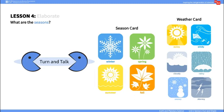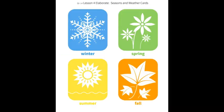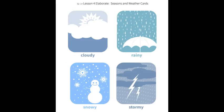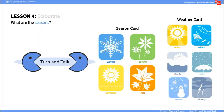In the Elaborate portion of the lesson, ask students to consider if Mr. Bear will need his shade structure to be comfortable during different seasons. Provide each student with a Season card and a Weather card from these teacher pages. In this activity, they will work with a partner to explain what Mr. Bear would need to have or do to be comfortable outside.